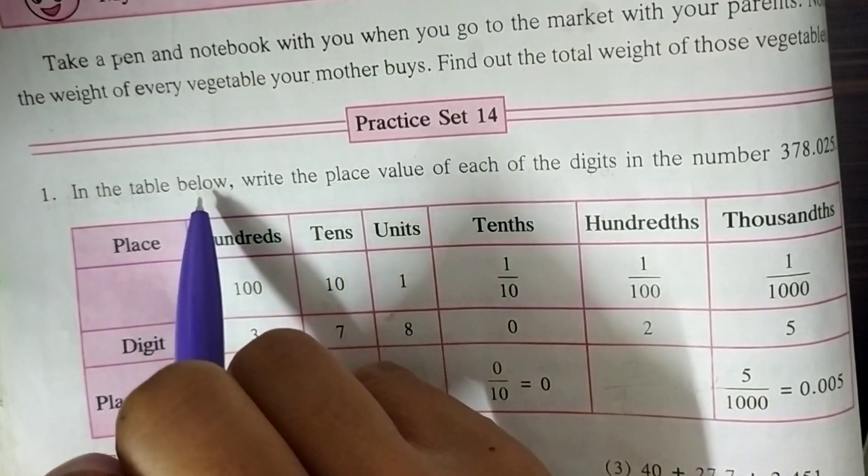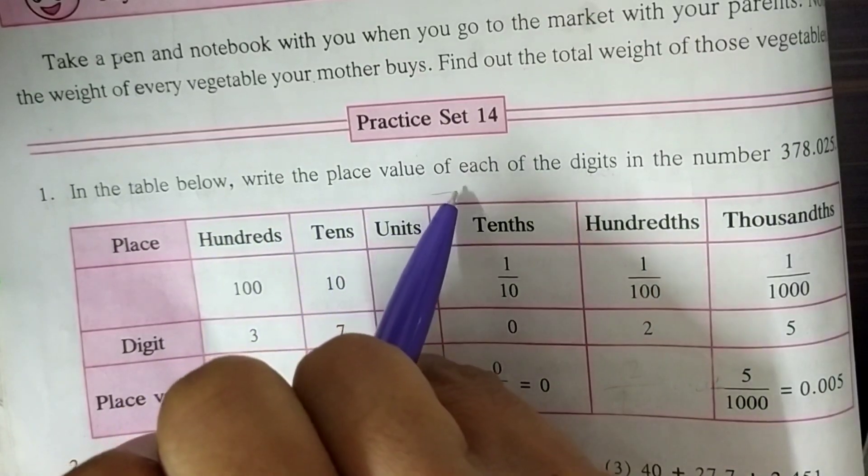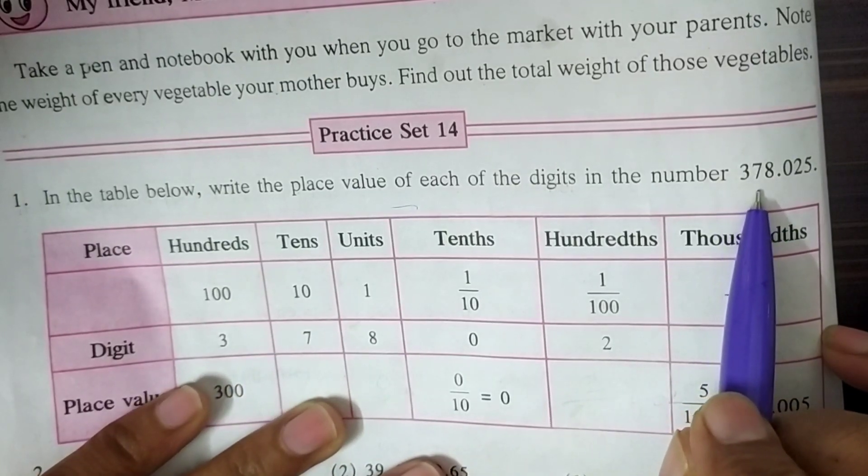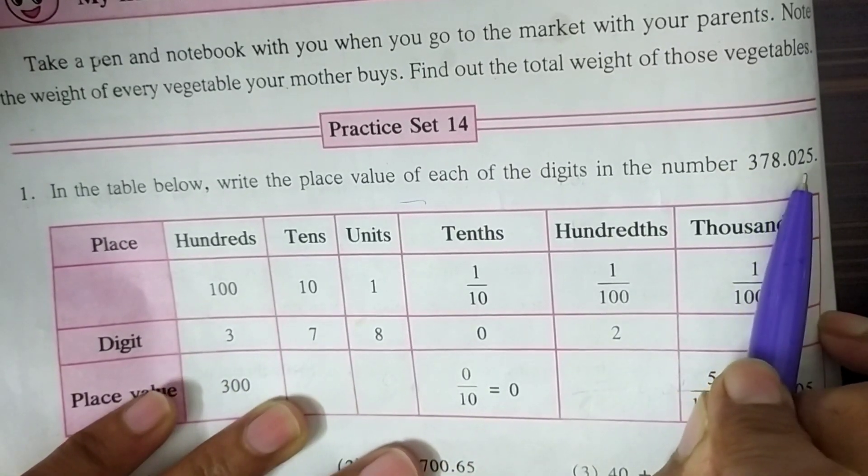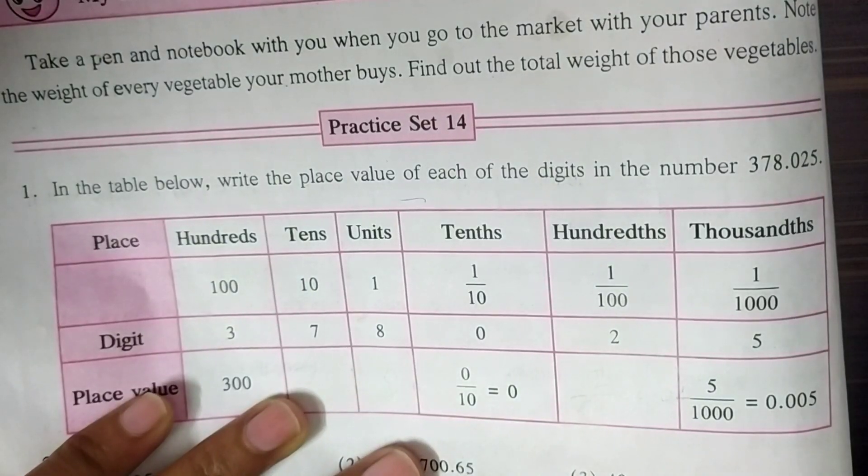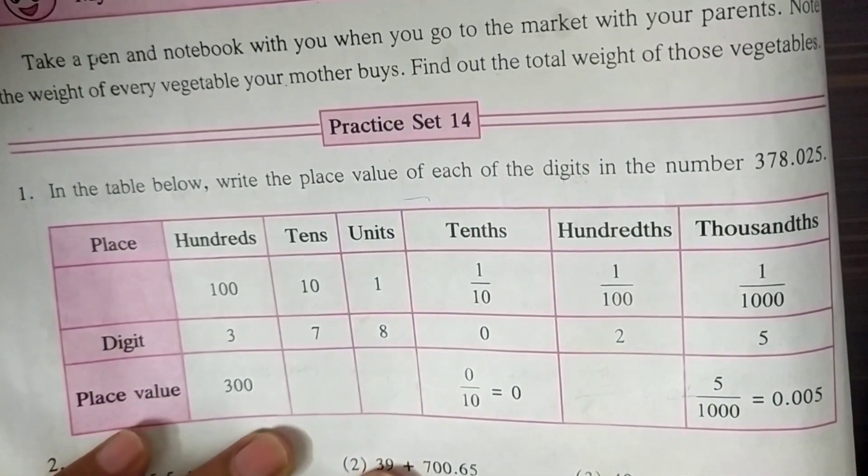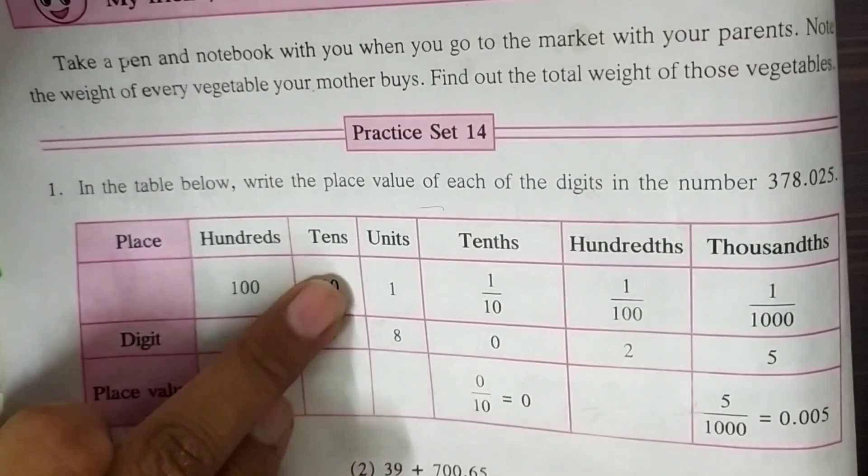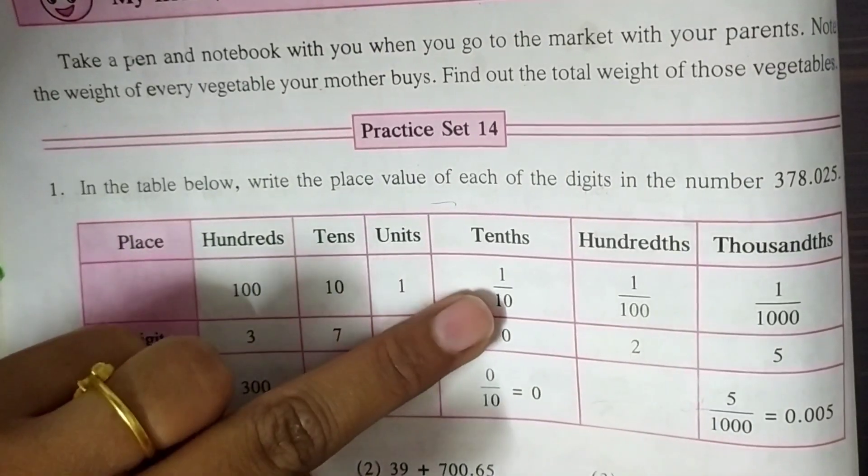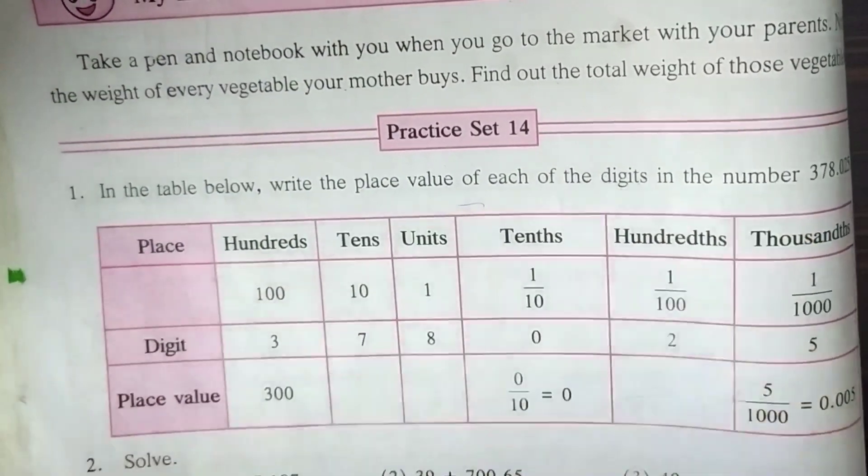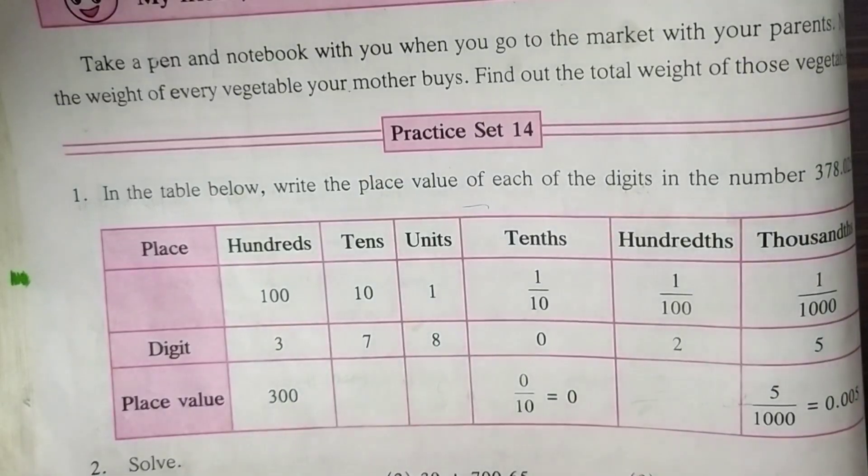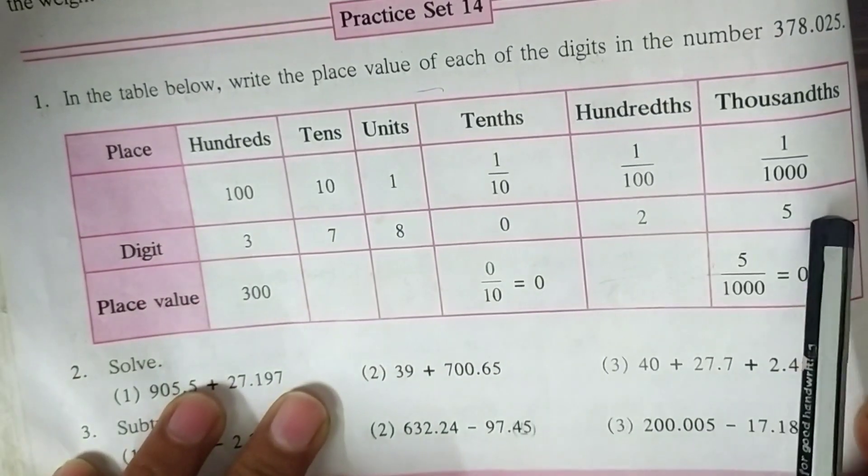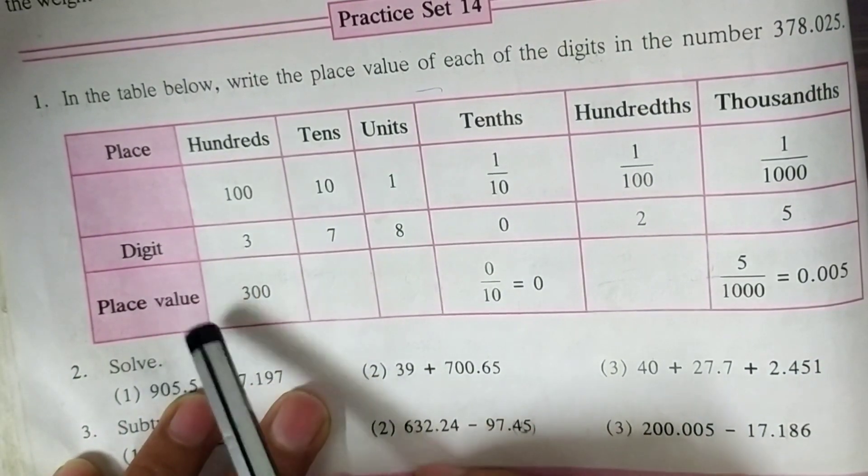Question one is: in the table below, write the place value of each of the digits in the number 378.025. We have to write the blank places here. They give us the places like hundreds, tens, units, tenths, hundredths and thousandths. They also write digits and we have to write their place values.